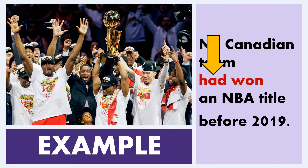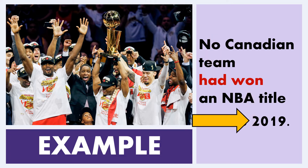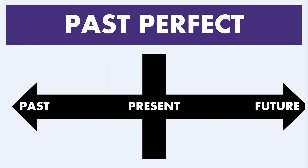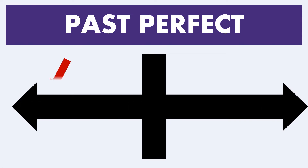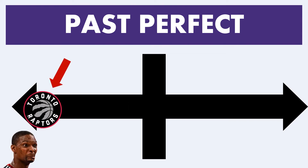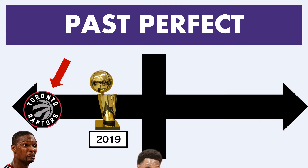Here we have the word 'had' paired with a past tense verb, and the time frame is placed before 2019. On our timeline, it'll look something like this: no Canadian team — sorry Chris Bosh — had won an NBA title before 2019. Thanks Kyle Lowry, we appreciate that.